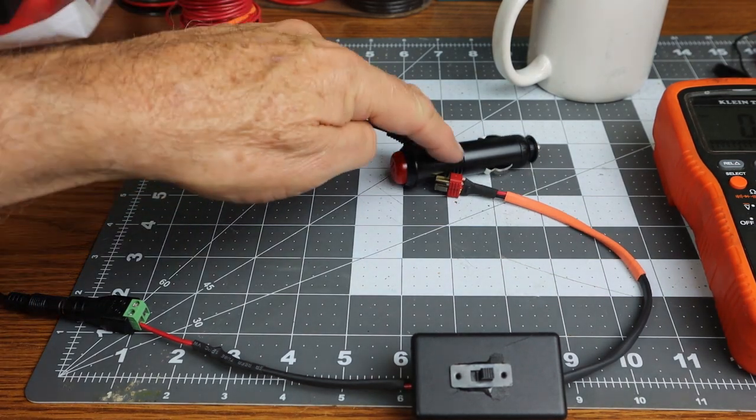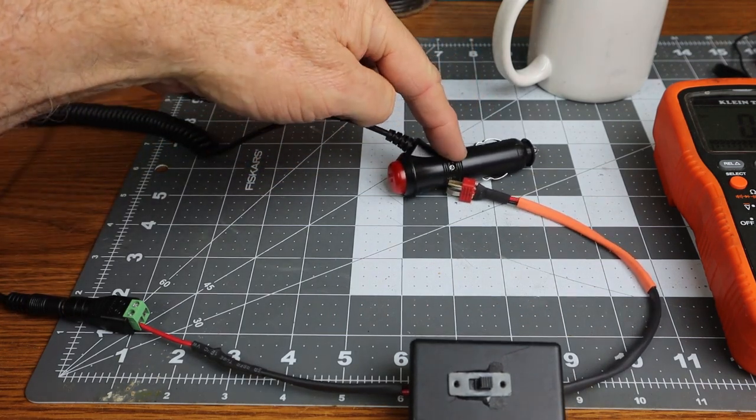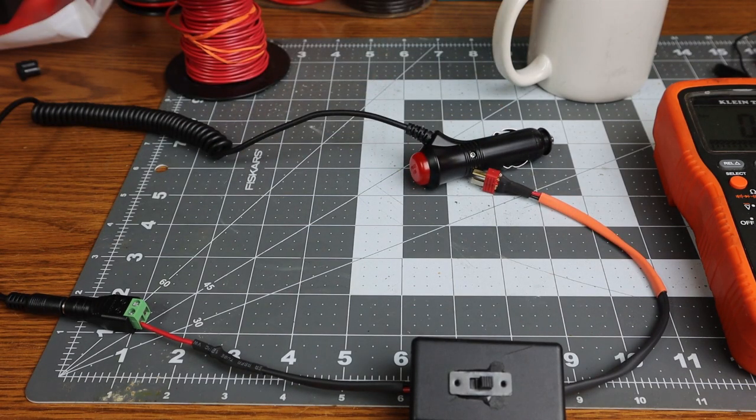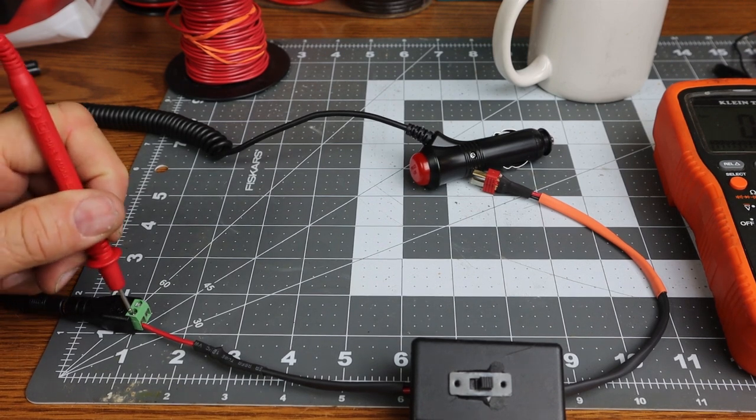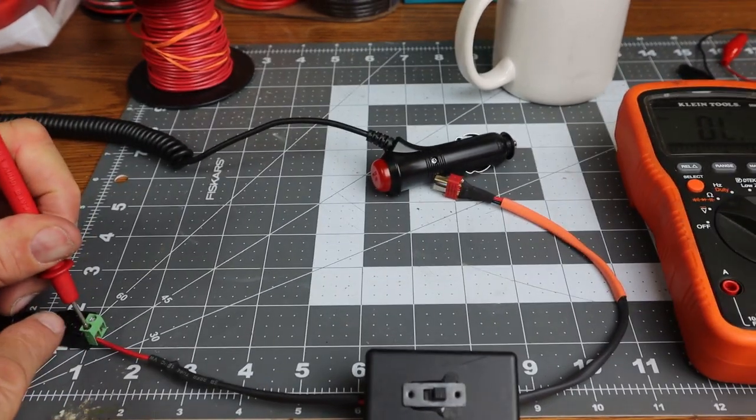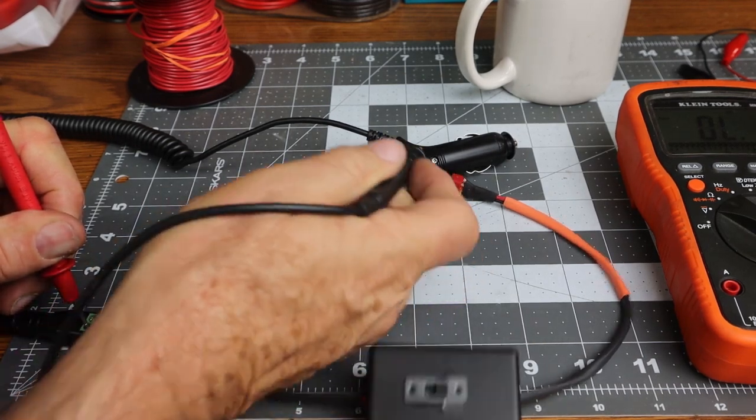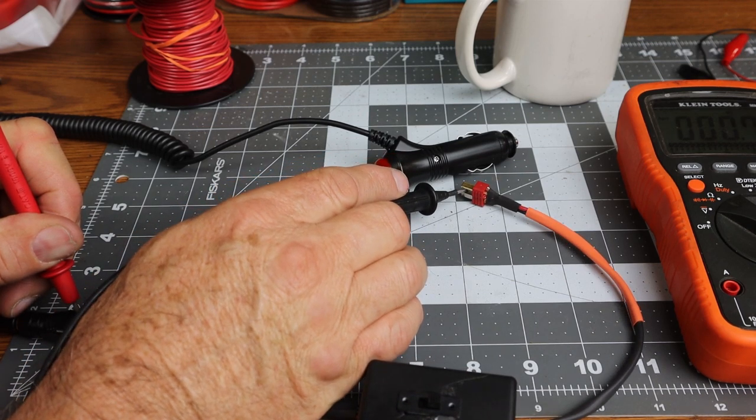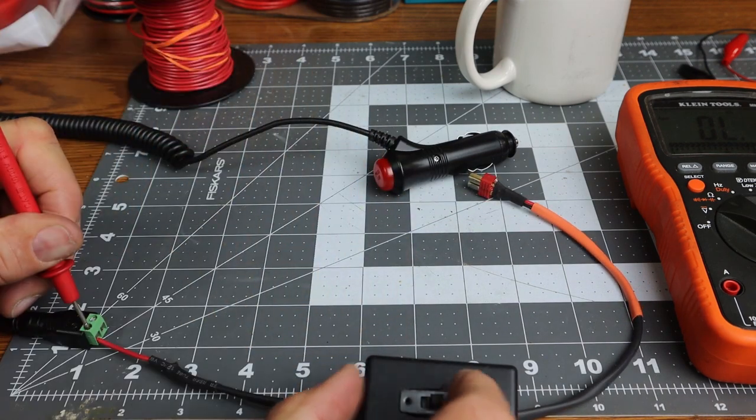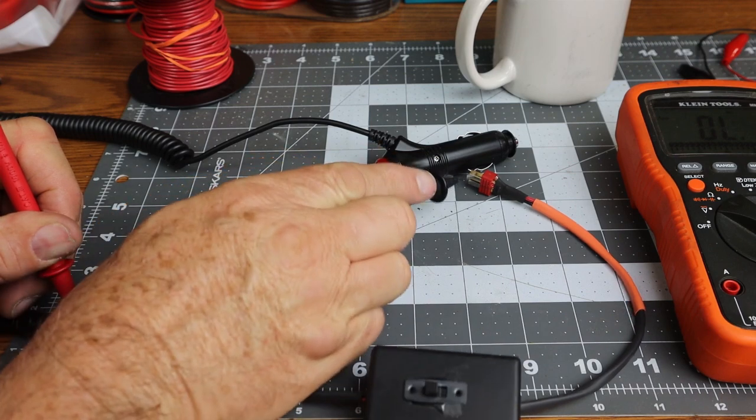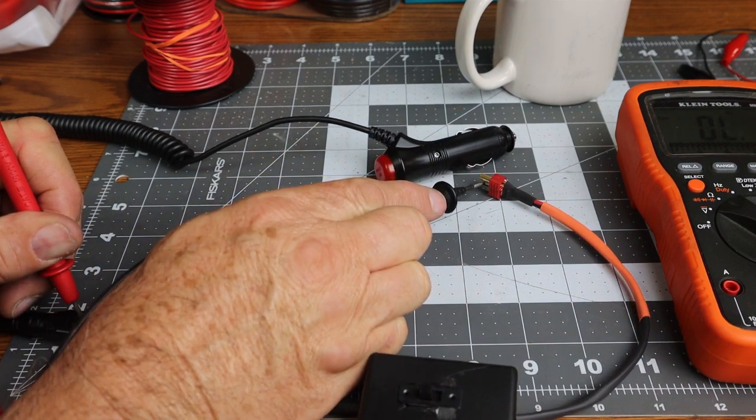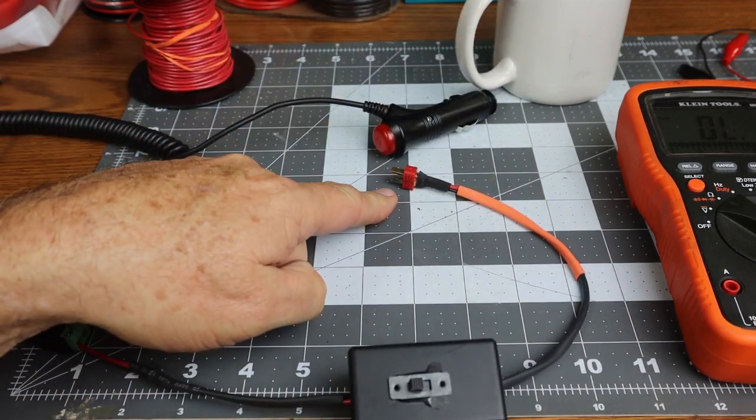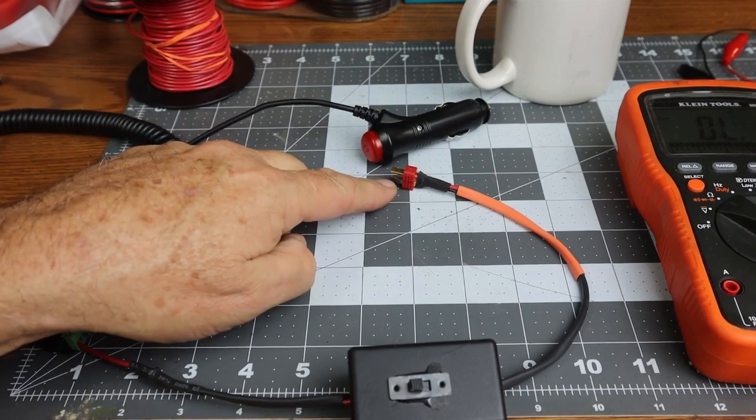Let me show you how we're going to test this to make sure we're wired properly. The cigarette lighter provides 12 volts. We have the switch in the on position, so if we touch the connector coming from the cigarette lighter and touch the red lead, the black lead works, red lead doesn't. We switch the switch on.